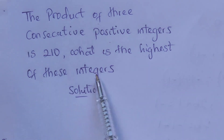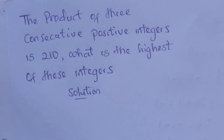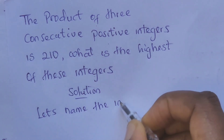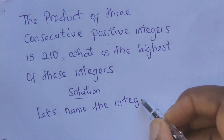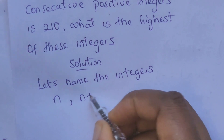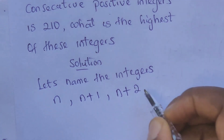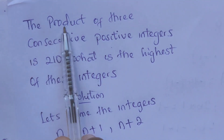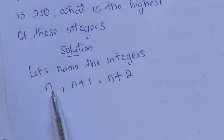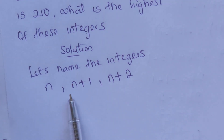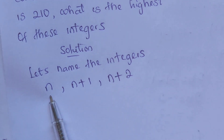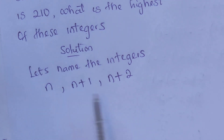What is the highest of these integers? To begin, let's name these integers. Let's name the first one n, the second one will be n plus one, and the third one will be n plus two. The product means we multiply the three integers — they are consecutive because after n we have n plus one, and after n plus one we have n plus two.